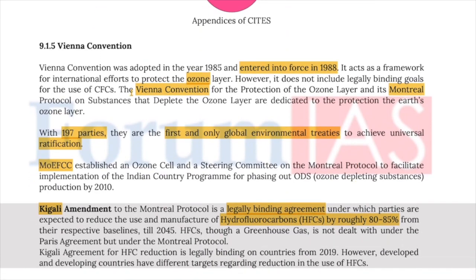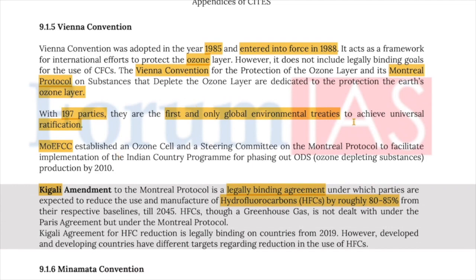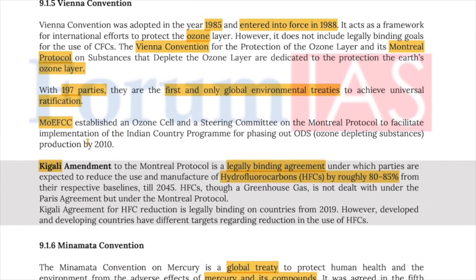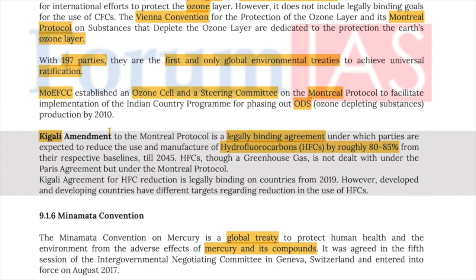The Vienna Convention was adopted in 1985 and entered into force in 1988, acting as the framework for international efforts to protect the ozone layer. The Vienna Convention for the Protection of the Ozone Layer and its Montreal Protocol on Substances that Deplete the Ozone Layer are dedicated to the protection of Earth's ozone layer. It has 197 parties and is the first and only global environmental treaty to achieve universal ratification. India's Ministry of Environment, Forest and Climate Change established an Ozone Cell and Steering Committee on the Montreal Protocol to facilitate implementation of the Indian country program for phasing out of ozone-depleting substances (ODS) by 2010.